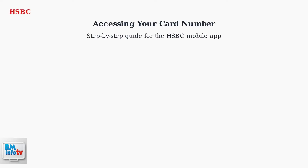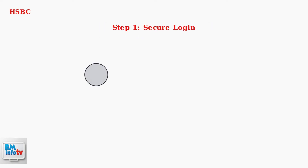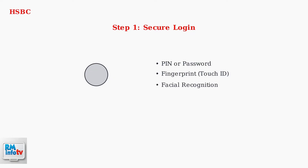To view your full card number on the HSBC app, you'll need to follow a secure process designed to protect your sensitive financial information. First, securely log into your HSBC app using your PIN, password, or biometric authentication like fingerprint or facial recognition. This ensures only you can access your account.